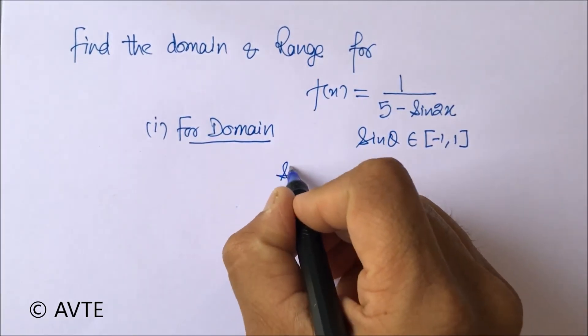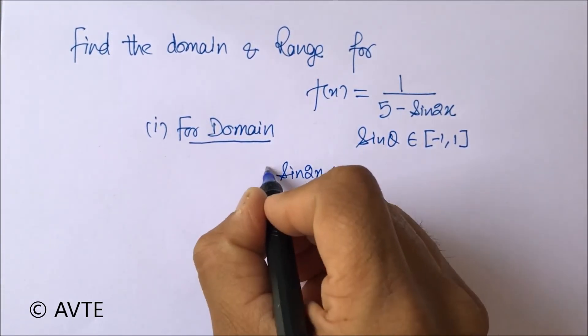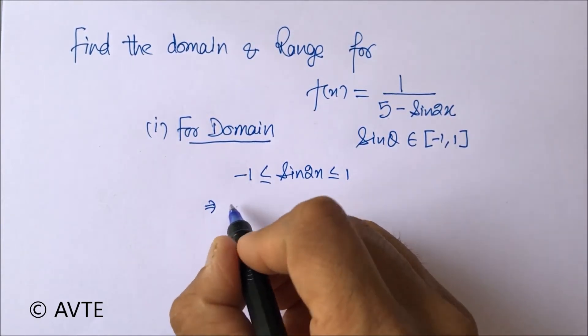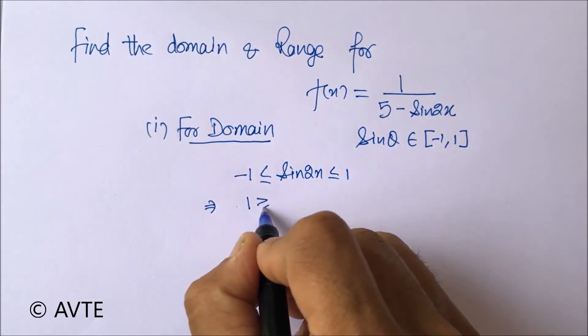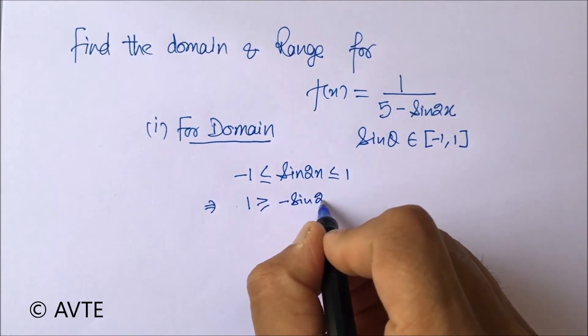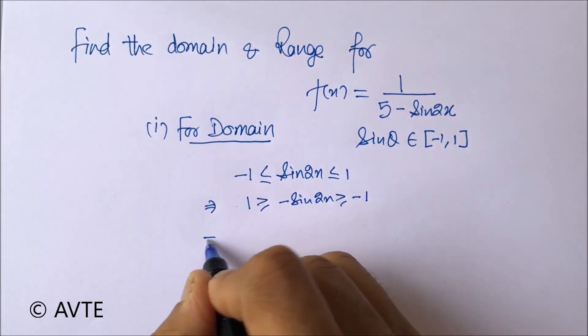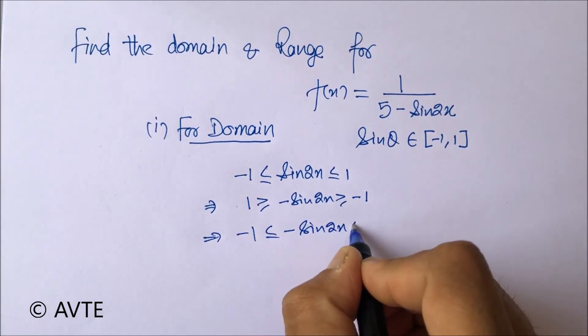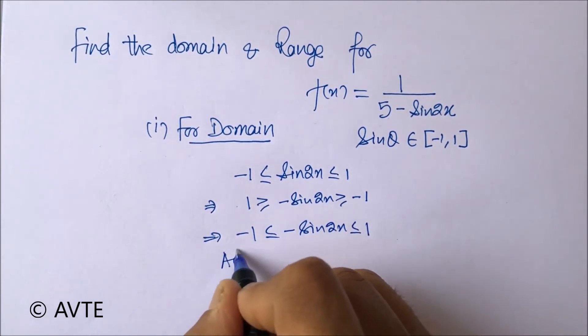So now when you multiply with minus one, this thing will happen, which is again the same. Adding five.